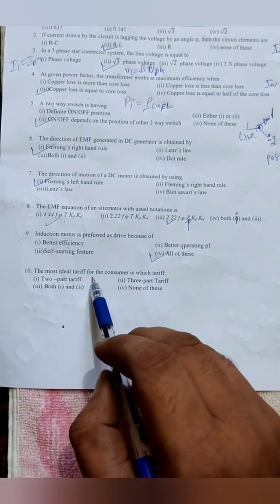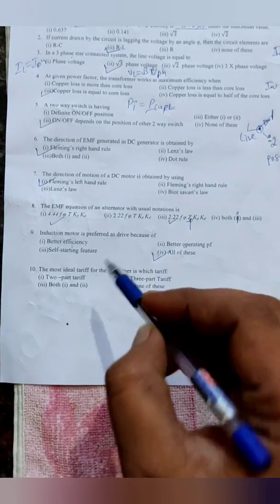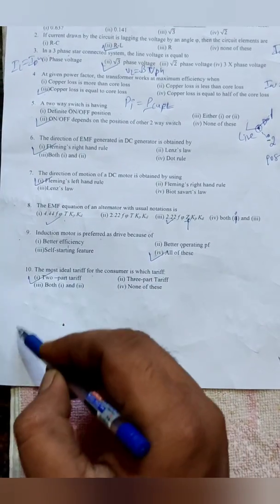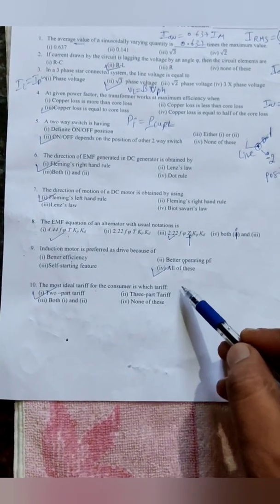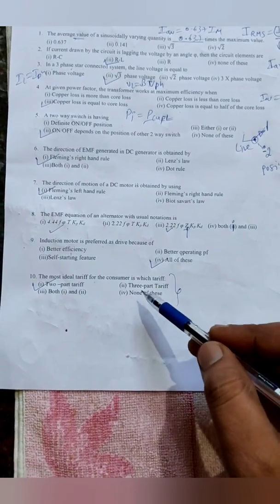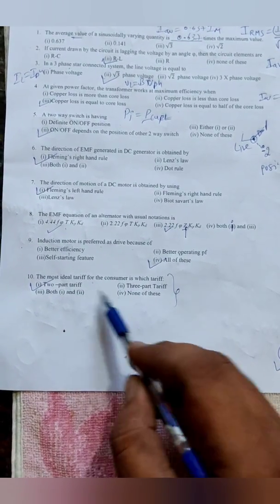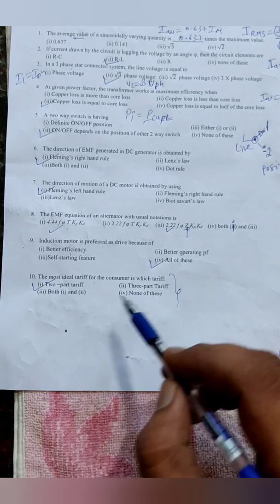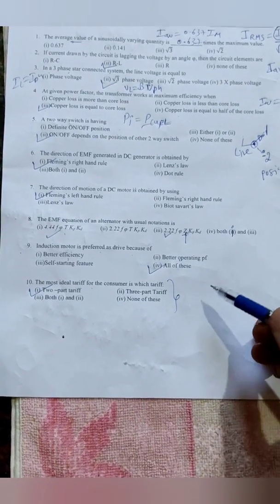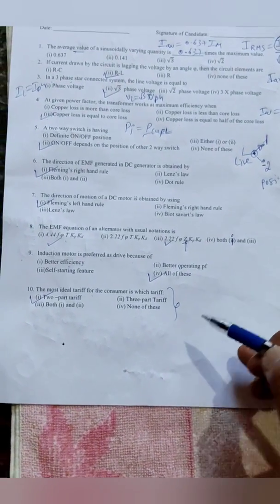The most ideal tariff for the consumer is which tariff? Two part tariff. Got it? Even this is not a waiver question, it is general discussion. This is a debate type of question. What they will ask - is fuse a weakest or strongest link, like that? Because we can use this in any different types of explanation.